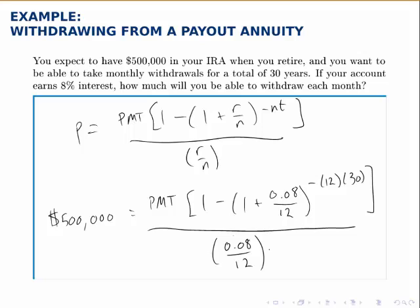If we want to solve for the payment amount, or the withdrawal amount, we need to figure out everything in brackets, simplify that to one number, divide that by 0.08 over 12, and then we'll have a single number times PMT equals $500,000. Then we'll divide $500,000 by that single number to solve for PMT.